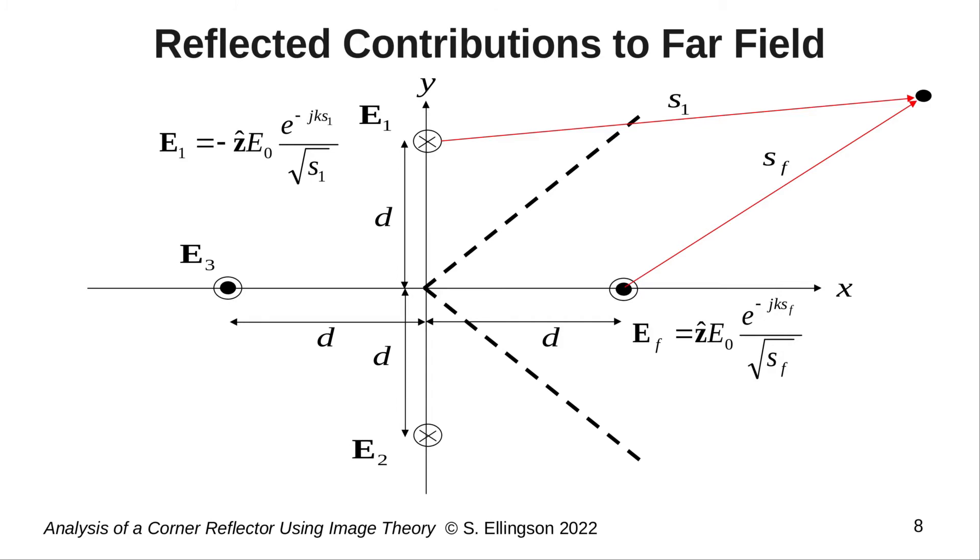We add to that the contribution from the line source at y equals plus D. This expression is, of course, essentially the same, except for the sign and also S sub f becomes S sub 1. And we'll do exactly the same thing for the other two line sources, with associated distances S sub 2 and S sub 3.